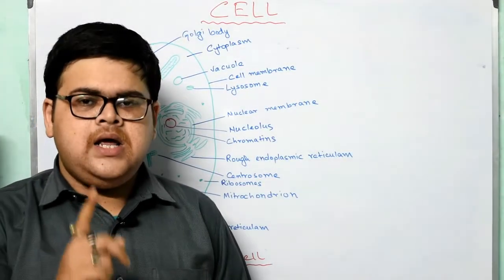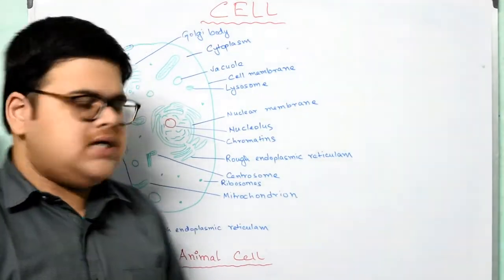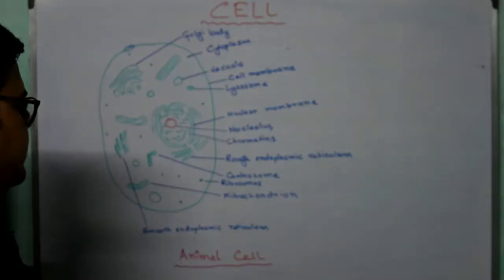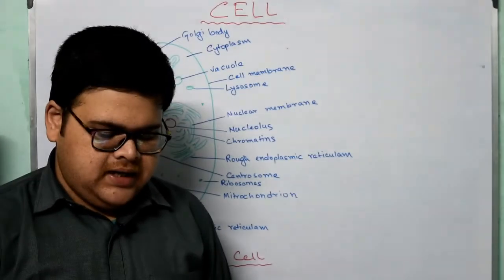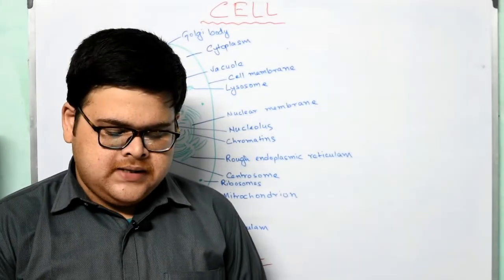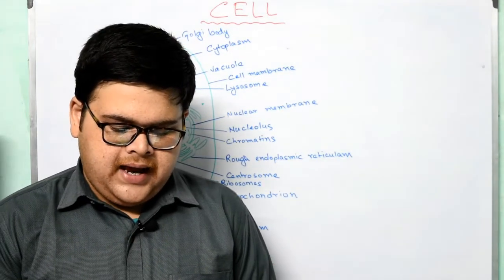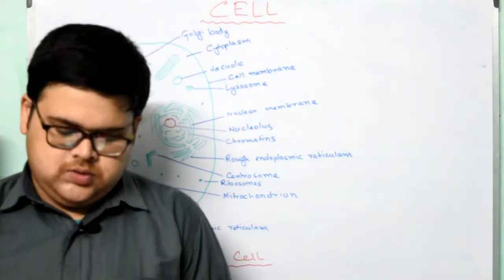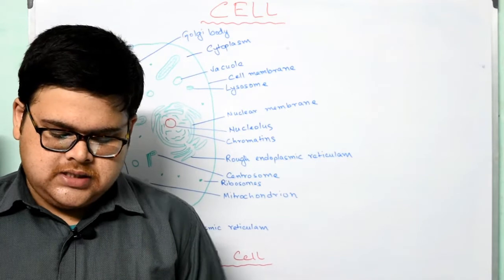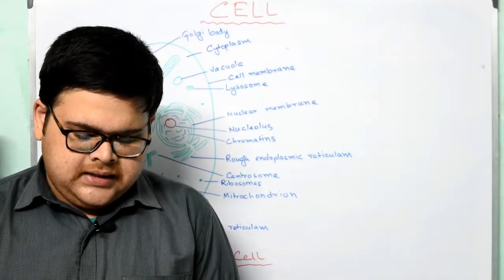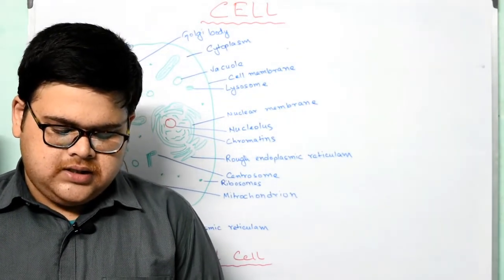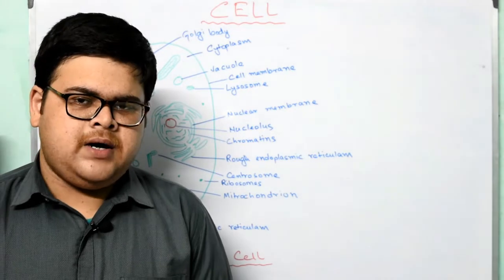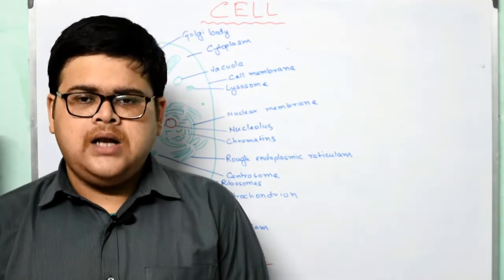The cell wall is present in plant cells and not in animal cells, so I have not drawn it here as this is an animal cell. Plants have an additional layer called the cell wall surrounding the cell membrane. The cell wall is non-living and is composed of cellulose. It provides protection and maintains the shape of the plant cell. The cell wall allows substances to enter through diffusion — it is freely permeable. So, cell membrane is selectively permeable, but cell wall is freely permeable.